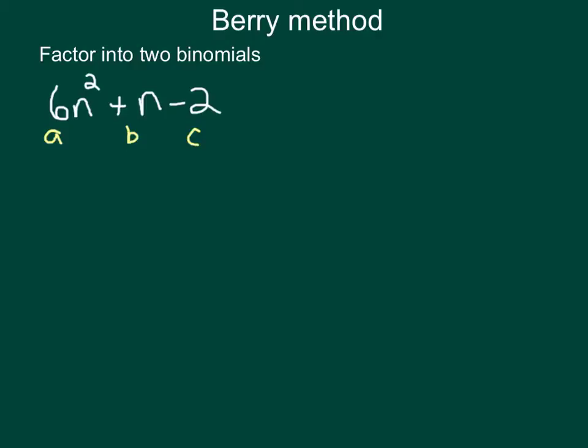The next thing that we want to do is we want to multiply our A times C. So if we multiply 6 times negative 2, it gives us negative 12. And we've got to figure out two numbers that multiply together to give us negative 12, but when you add them together, give us a positive 1. So you need to think about that for a second. Hopefully you found out that it was 4 and negative 3.